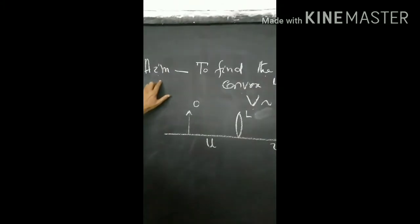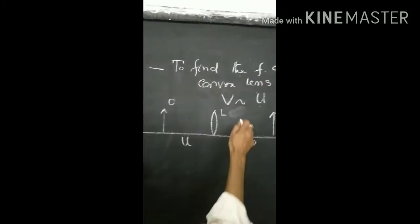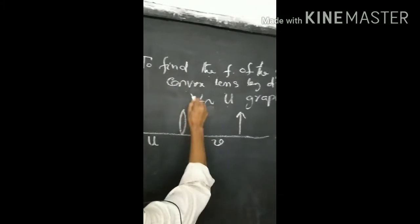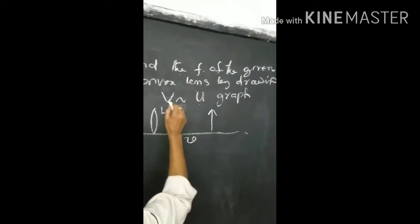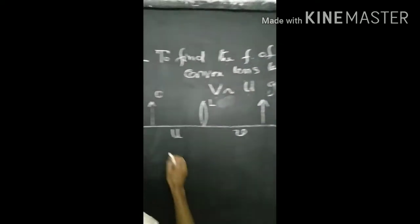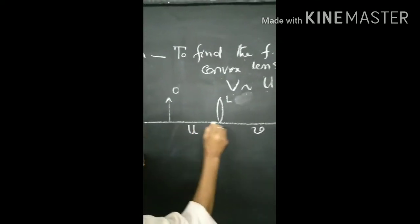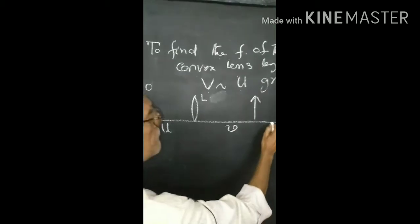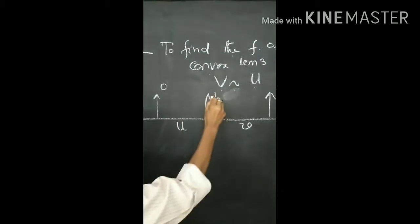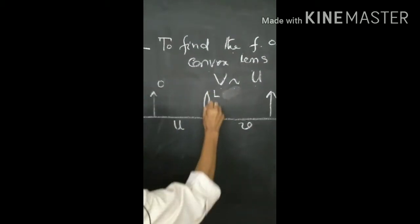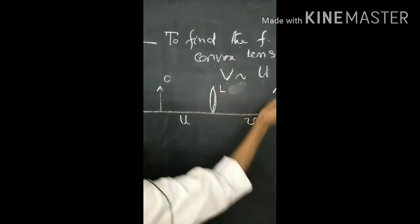The aim of the experiment is to find the focal length of the given convex lens by drawing v against u. Let's draw the outline of the optical bench. You keep the lens here and keep the object pin here.